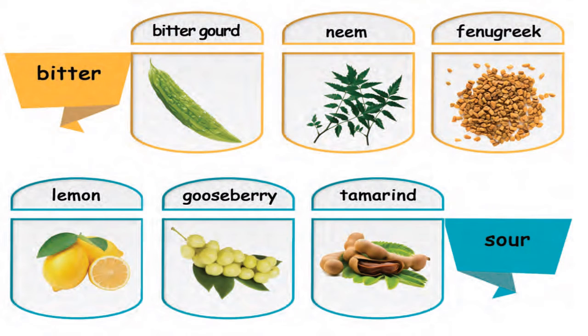Sour. Lemon — L-E-M-O-N — Lemon. Gooseberry — G-O-O-S-E-B-E-R-R-Y — Gooseberry. Tamarind — T-A-M-A-R-I-N-D — Tamarind.